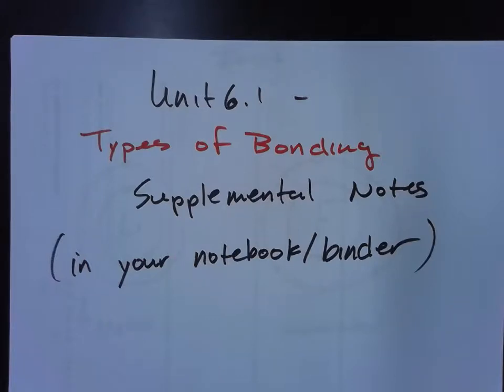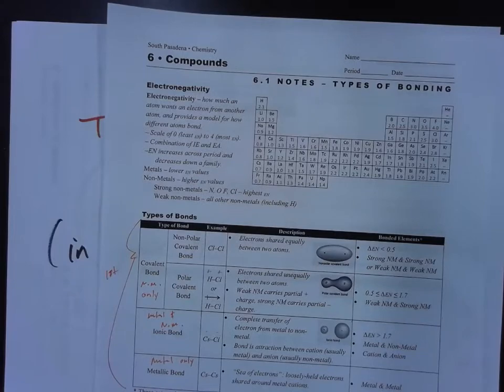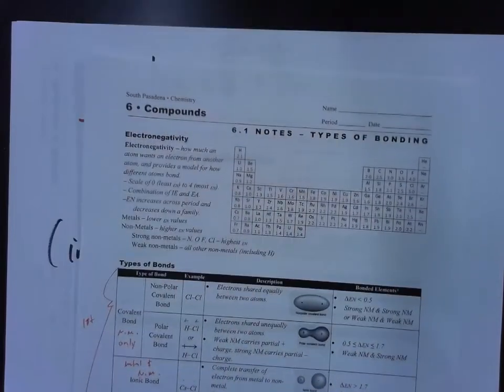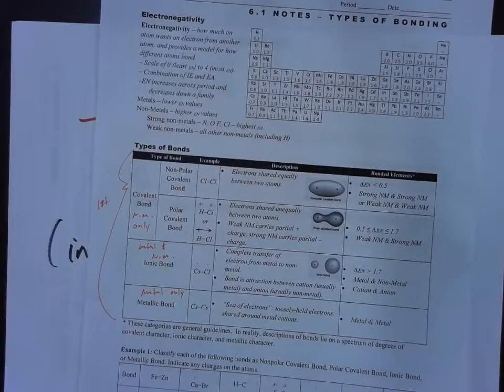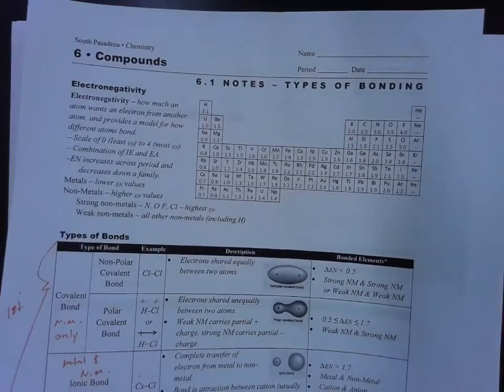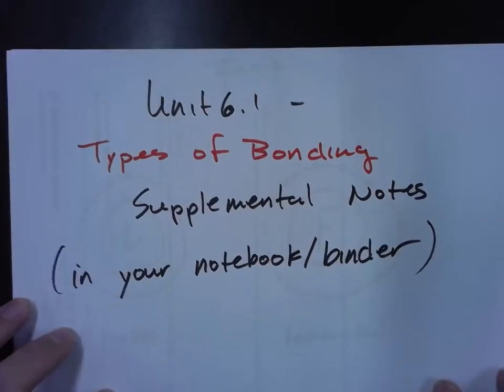This is unit 6.1 types of bonding supplemental notes. You can go ahead and do these in your notebook or binder. This is going to lay the foundation for the 6.1 notes that I'm going to show you. I looked over these and determined that there's not enough information here. The information is unclear so I need to do the foundational work first.